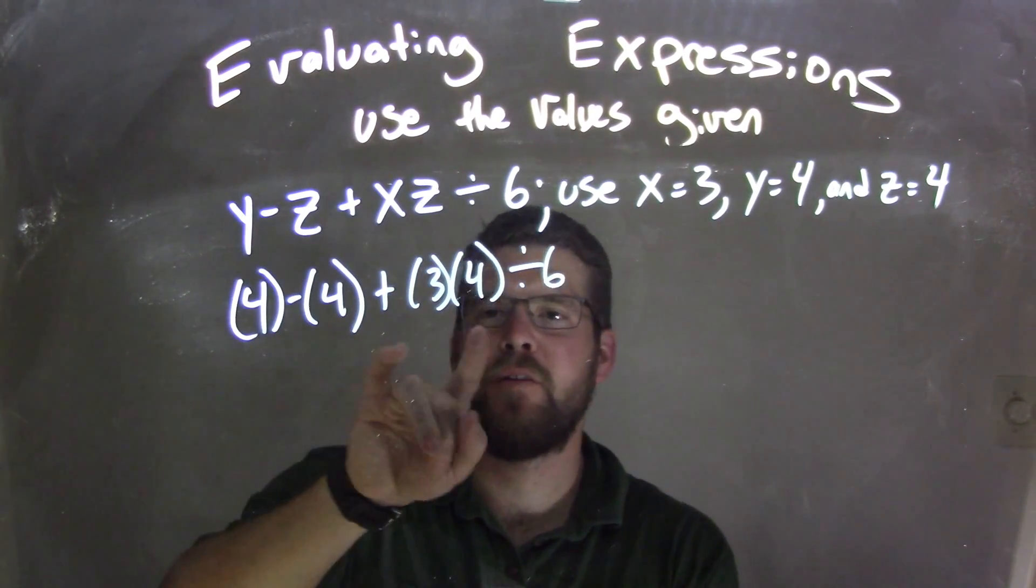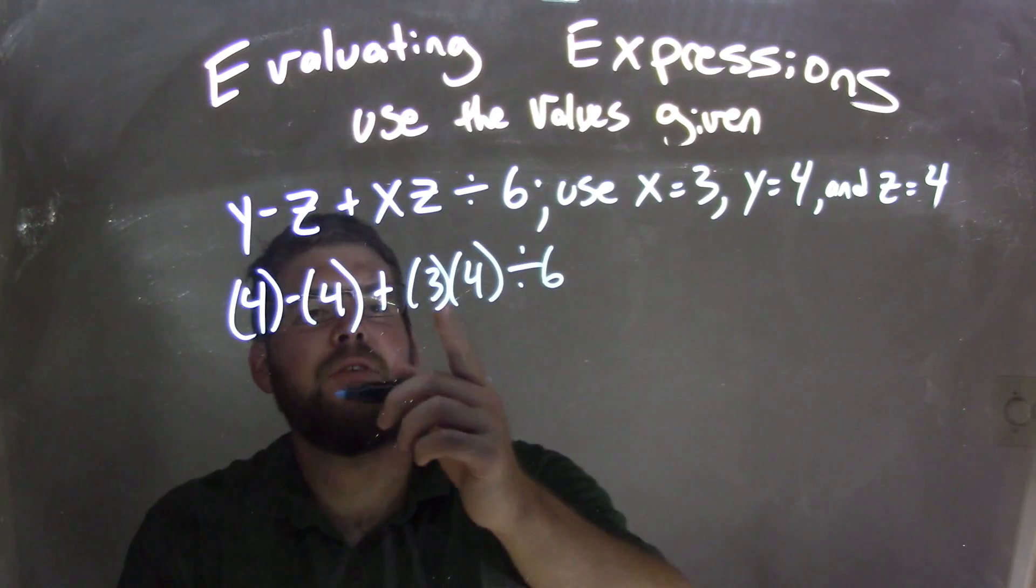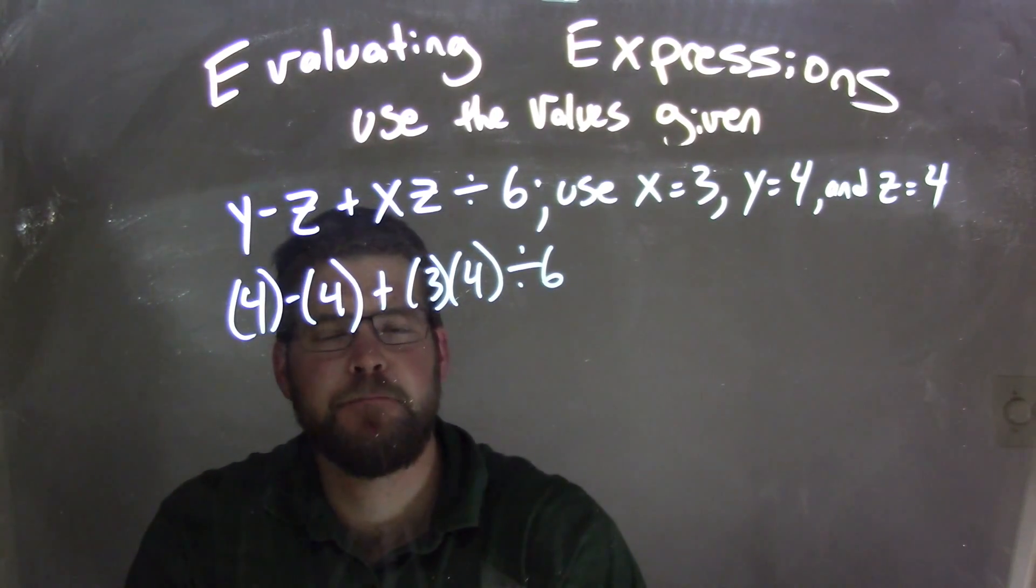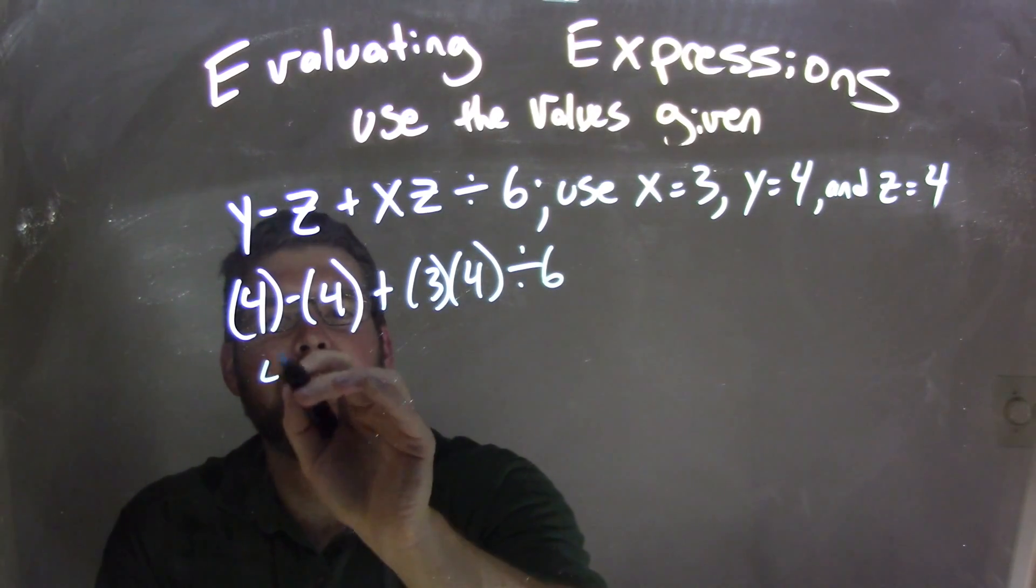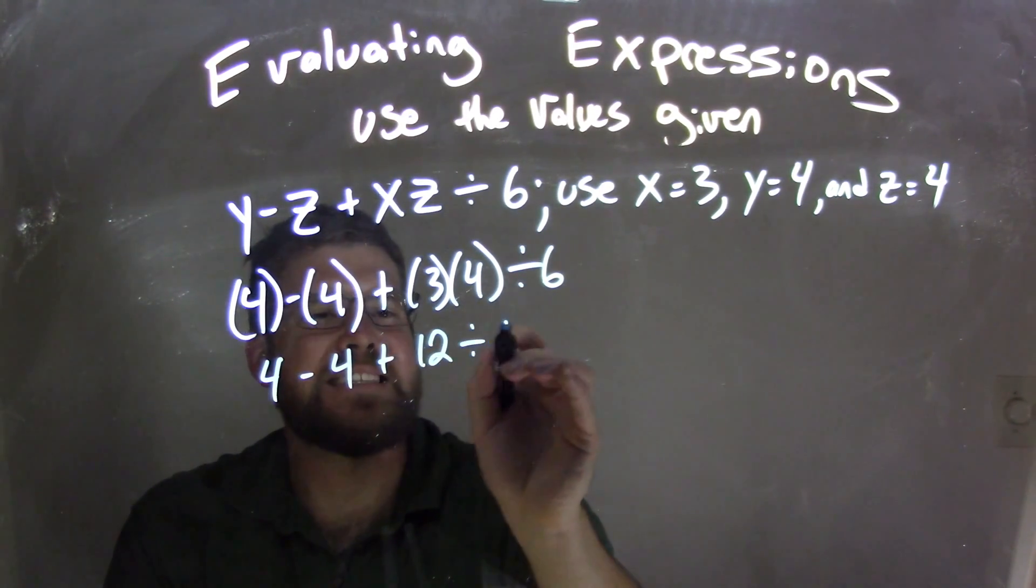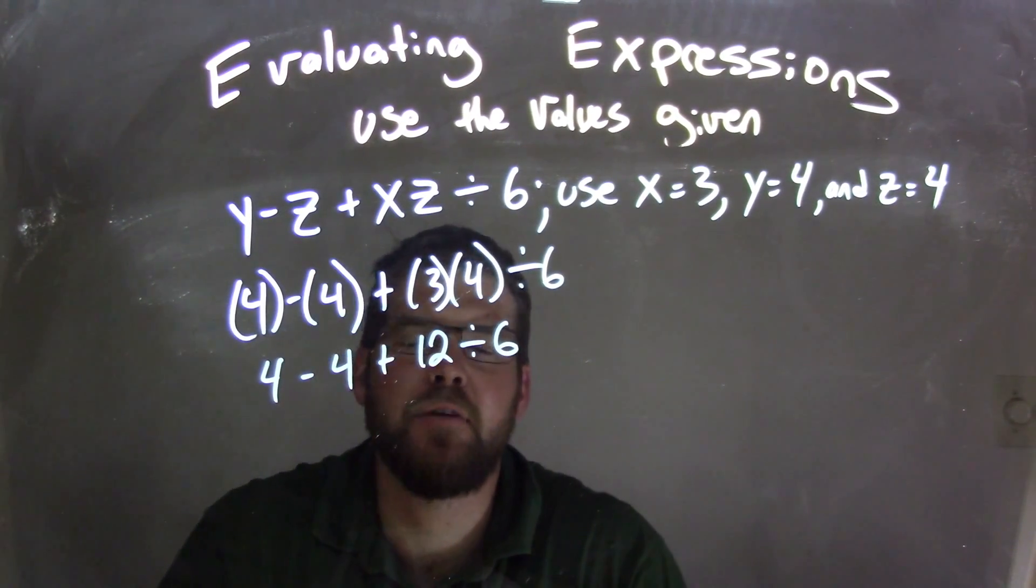So now let's look at it. Our orders here, we have multiplication and division. They're all next to each other. Multiply and divide, we'll be left to right first. So 4 minus 4, I'm going to leave out here for now. 3 times 4 is 12, divided by 6.